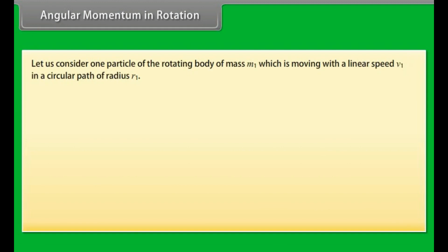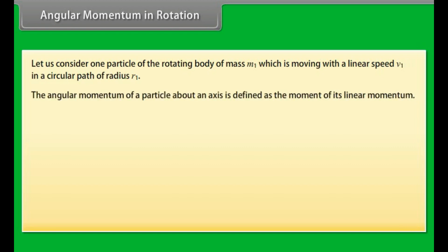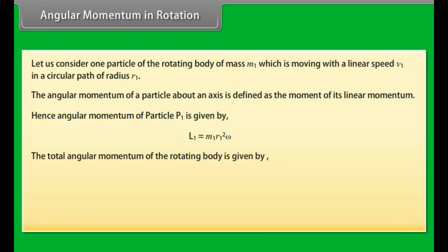For a particle of mass m₁ moving with linear speed v₁ in a circular path of radius r₁, angular momentum about the axis is L₁ = m₁r₁²ω. The total angular momentum of the rotating body is L = L₁ + L₂ + ... + Lₙ = m₁r₁²ω + m₂r₂²ω + ... + mₙrₙ²ω, giving L = Iω.